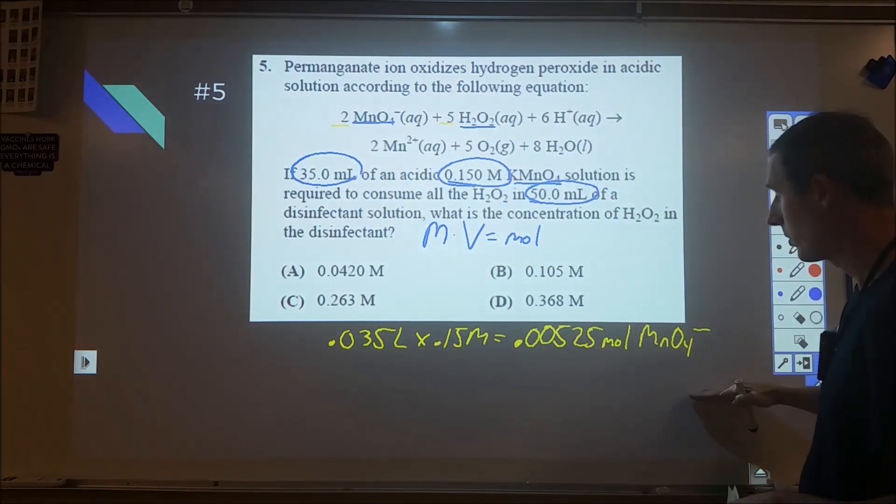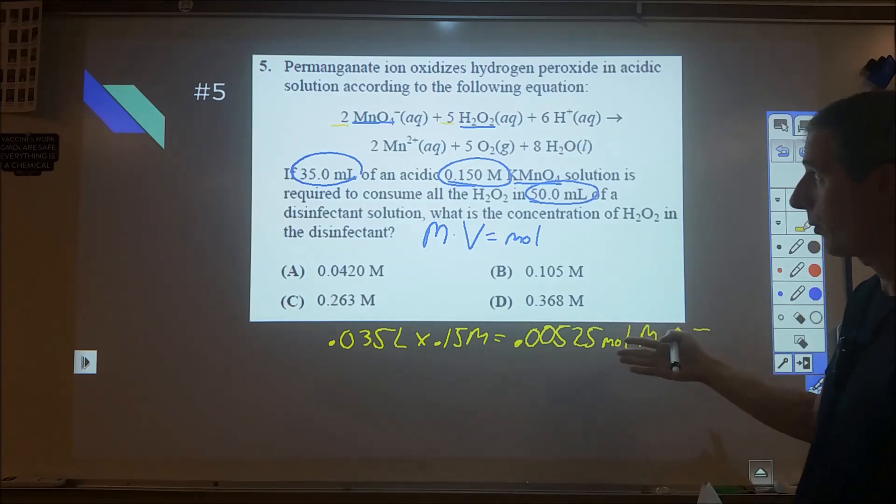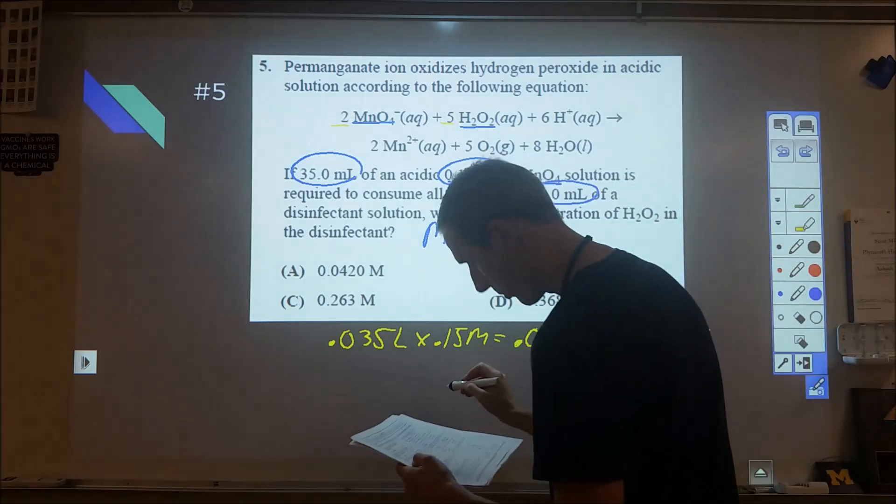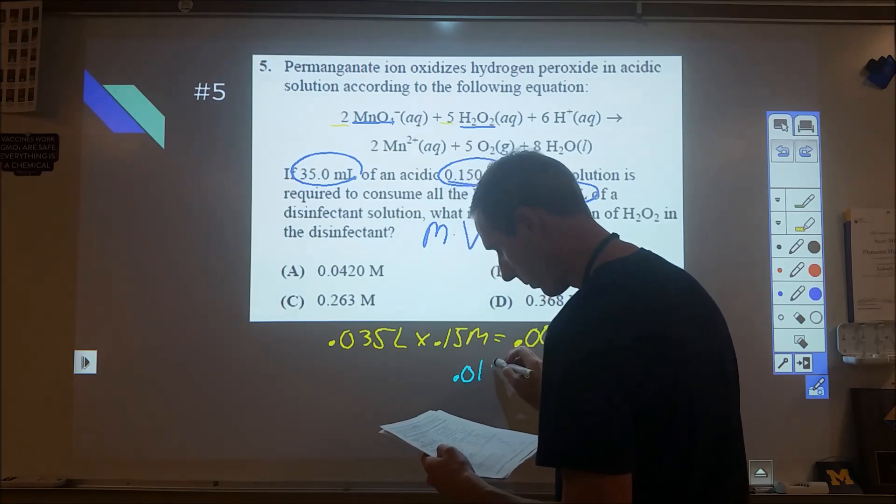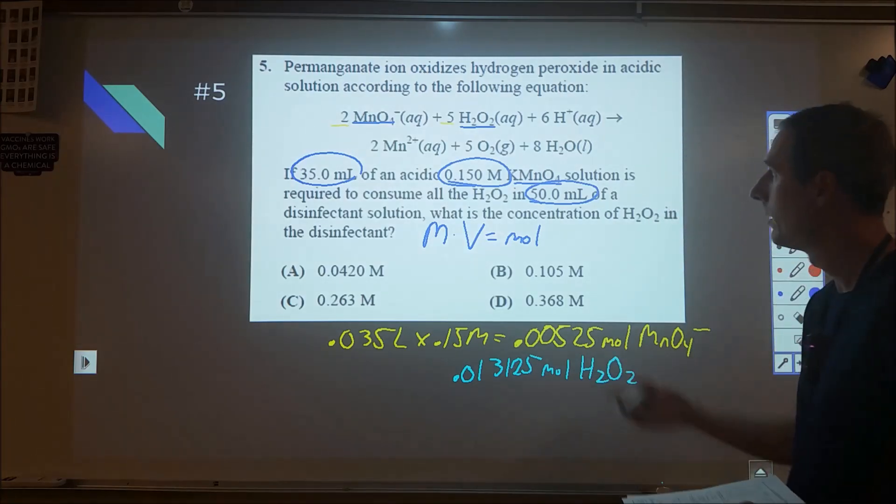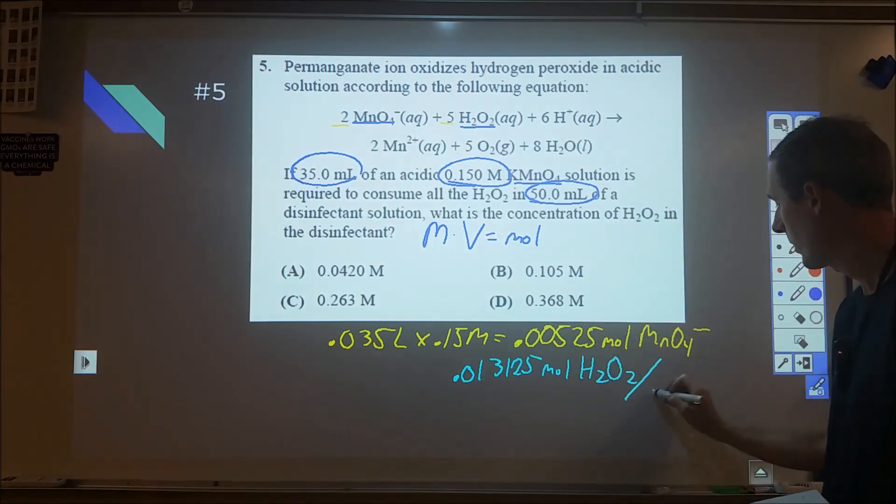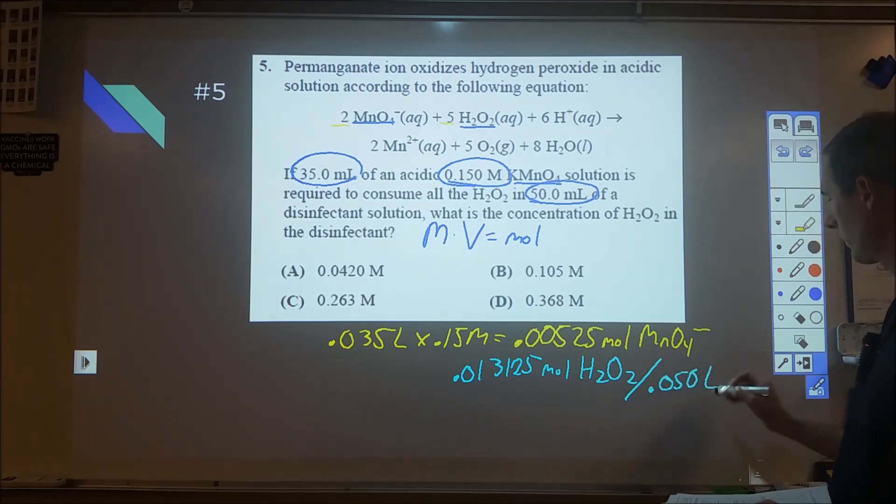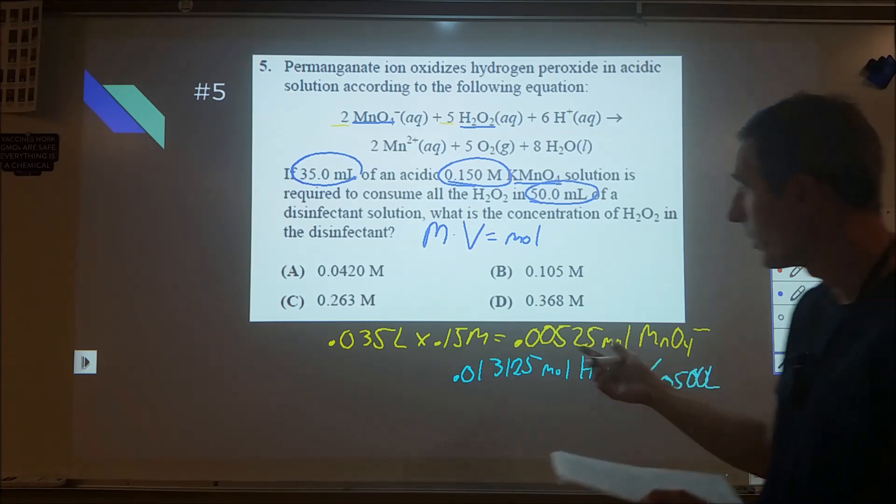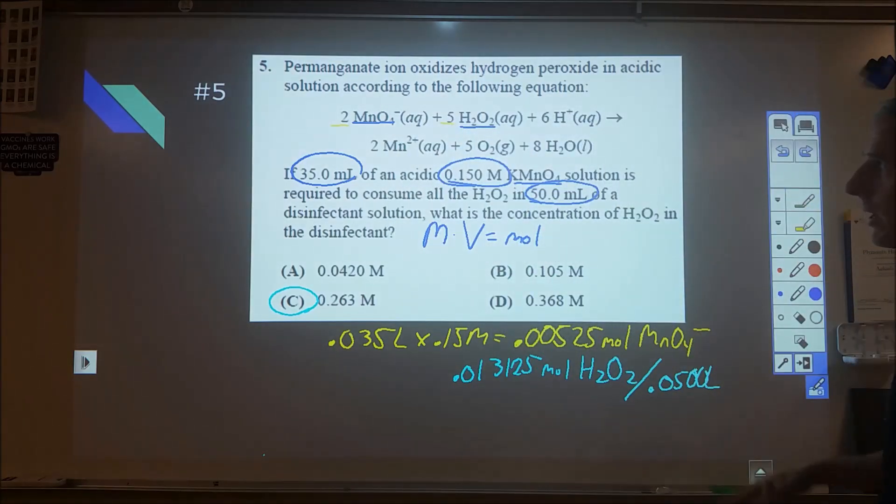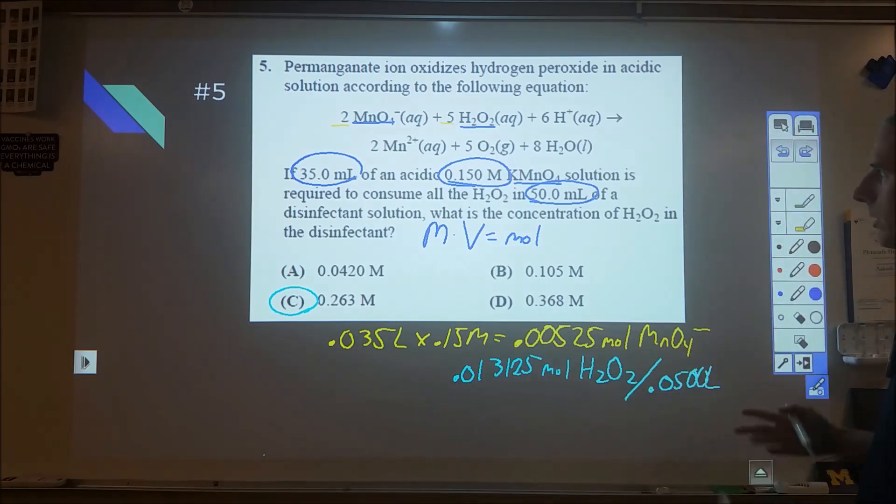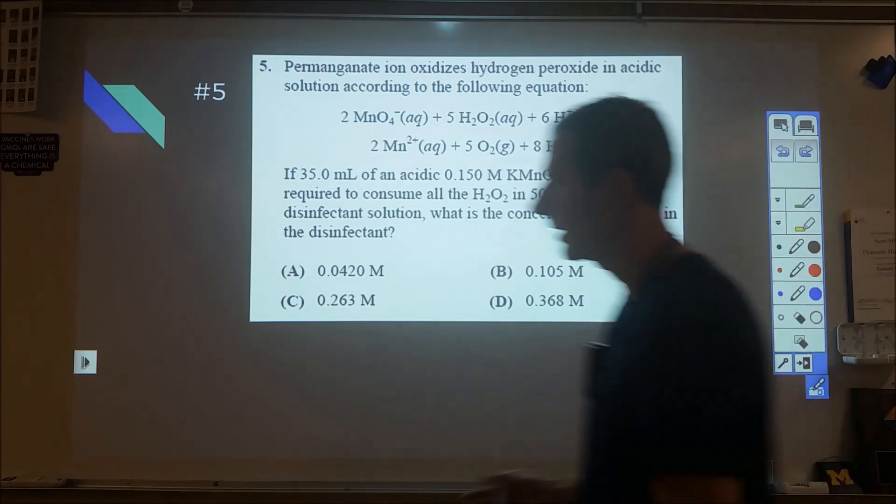We apply the mole ratio of 2 to 5. Every two permanganate reacts with five peroxides. So peroxide moles is 5 halves times this number, which is 0.013125 moles of peroxide. Divide by 0.0500 liters to get concentration, and we end up with 0.0263, which was C. That problem is really straightforward as long as you know this immediately.